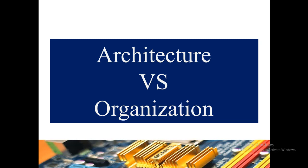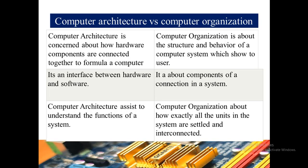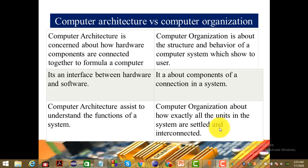Let's compare computer architecture and computer organization. First, computer architecture is concerned with how hardware components are connected together to formulate a computer. Computer hardware includes the physical parts such as the CPU, monitor, mouse, keyboard, data storage, graphics card, sound card, speakers, and motherboard. By contrast, software is a set of instructions that can be stored and run by hardware.